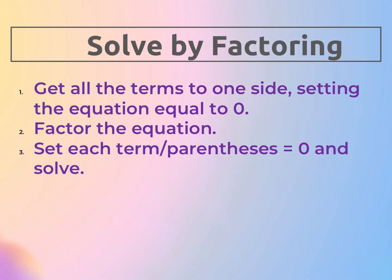Whenever we want to solve by factoring, we're going to get all the terms to one side and set the equation equal to zero. Then you're going to factor the equation, and after it's factored, you're going to set each term — sometimes it'll be a GCF — and then any parentheses equal to zero, and then you're going to solve. Let's go ahead and do a bunch of examples.